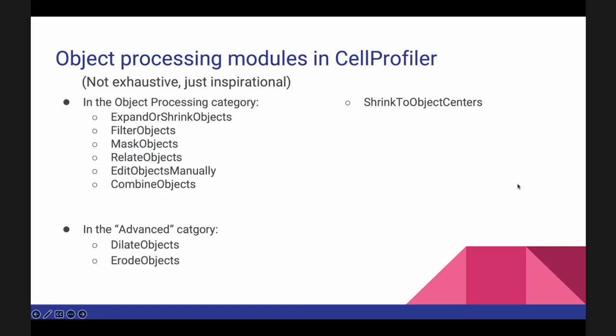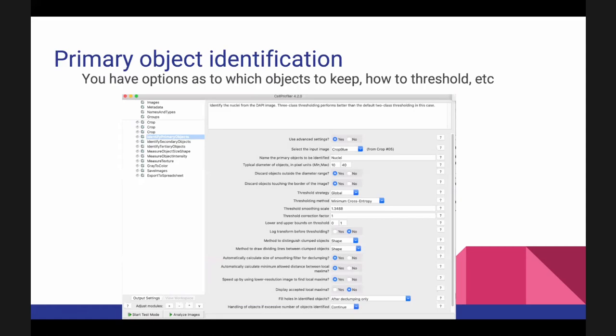Once you have your segmentation, CellProfiler offers many ways to work with your objects. You can filter them — for example, keeping only cells that have green dye inside them. Or you can edit the output of a segmentation that did an okay job but wasn't great. So once you've created a segmentation using all those settings, there are many ways to manipulate and refine it.